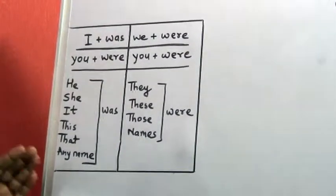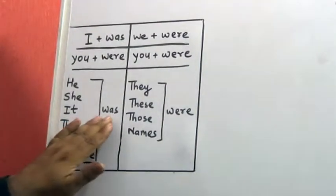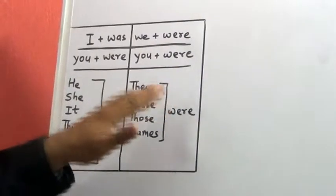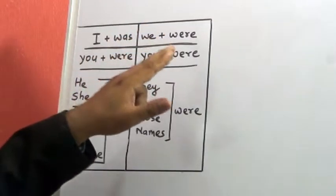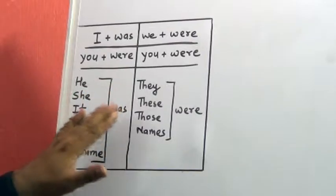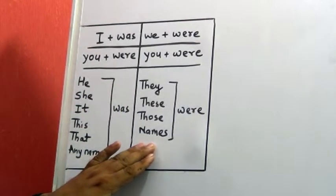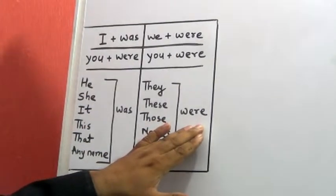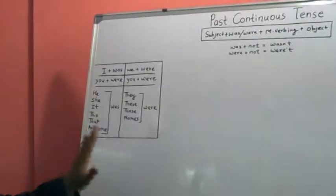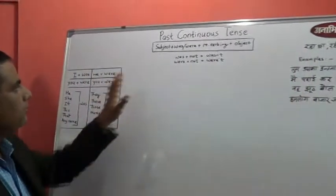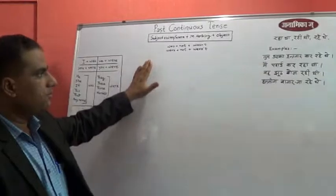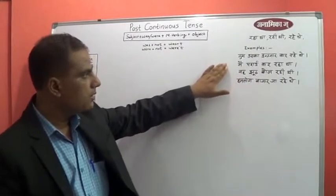As you can see: for singular — for 'I', 'was' will come; for 'you', 'were' will come; and for 'he', 'she', 'it', 'this', 'that', or any name, 'was' will be applicable. Similarly for plural — 'we' will come with 'were', 'you' will come with 'were', and 'they', 'these', 'those', and more than one name will come with 'were'. That's the only formula we have to keep in mind, and with the help of this structure we can frame sentences.